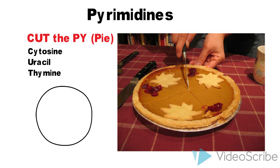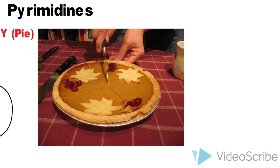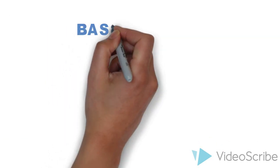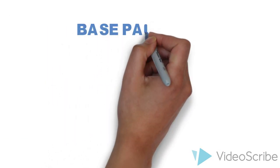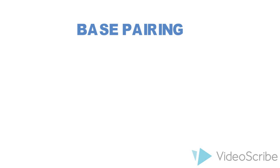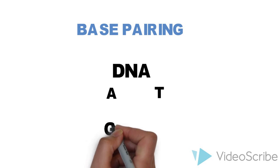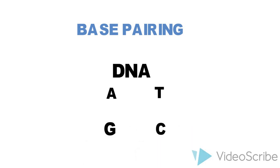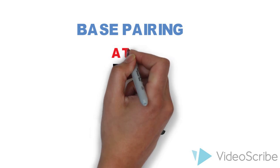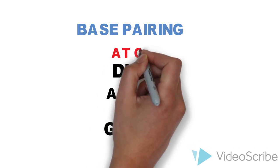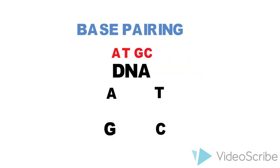Now let's move to pairing of the nucleotides in DNA and RNA. In DNA, adenine pairs with thymine and guanine pairs with cytosine. Just remember ATGC — this implies that A pairs with T and G pairs with C.